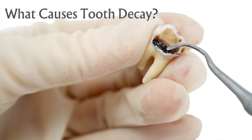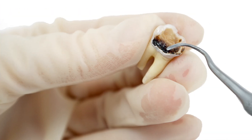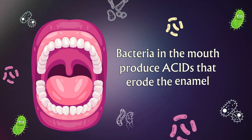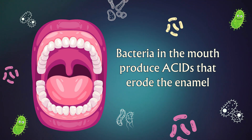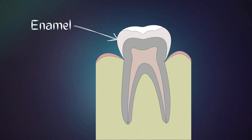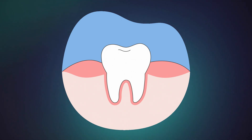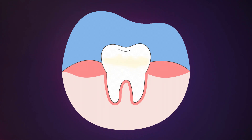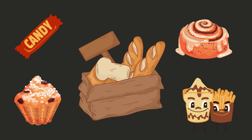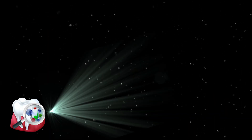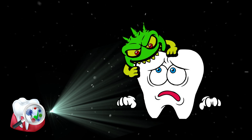Tooth decay occurs when the bacteria that naturally live in the mouth create acids that erode the outer layer of the tooth called the enamel, resulting in the formation of holes or cavities in the teeth. The presence of sugars, especially simple carbohydrates in the mouth, is key to forming cavities as the bacteria break down sugar to produce the corrosive acids.